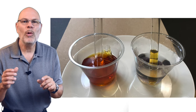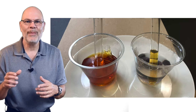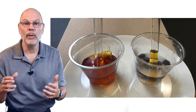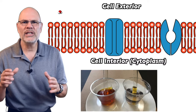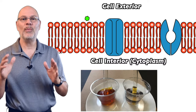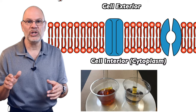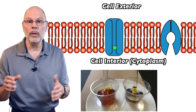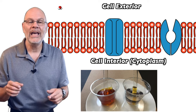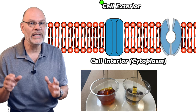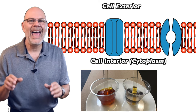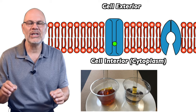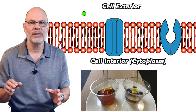Why is this important? What we've done in this lab is to demonstrate the properties of a selectively permeable boundary. And while the structure of a cell membrane is completely different from this dialysis tubing, the membrane is also a selectively permeable boundary. It lets some things pass through, but not others. And that selective permeability is really the basis of all living systems.